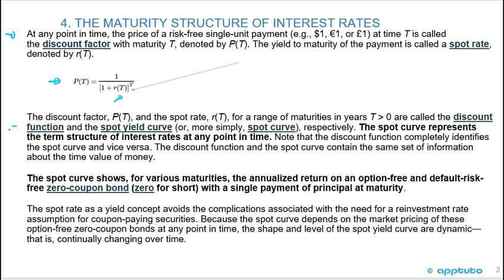The spot curve shows, for various maturities, the annualized return on an option-free and default-free zero-coupon bond — zero for short — with a single payment of principal at maturity. The spot rate as a yield concept avoids the complications associated with the need for a reinvestment rate assumption for coupon-paying securities. Because the spot curve depends on market pricing of these option-free zero-coupon bonds at any point in time, the shape and level of the spot yield curve are dynamic — that is, continually changing over time.